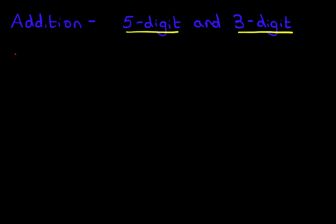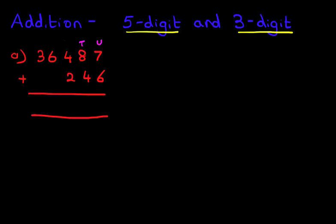Let's have a look at our first example. We're going to write this down in the vertical format. So we've got 36,487 plus 246. Let's put a nice big equal sign. Let's label the columns as well. We've got units, tens, hundreds, thousands, and TTH, which is ten thousands.